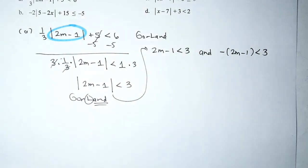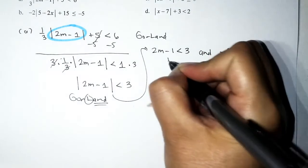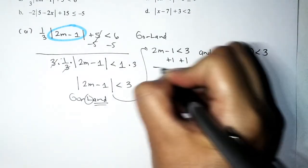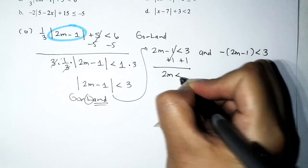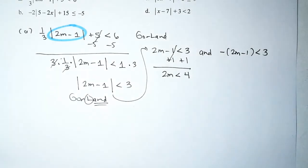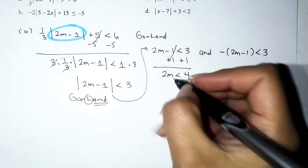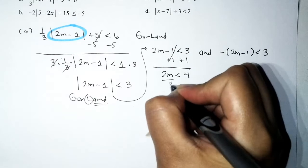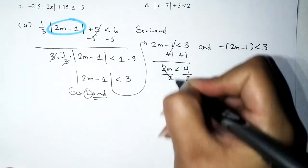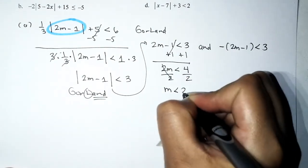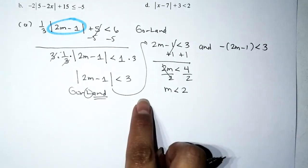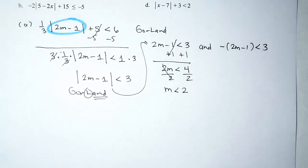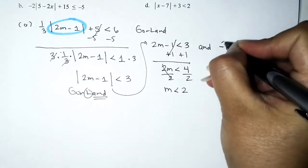First inequality: add 1 to both sides to get 2m < 4, then divide both sides by 2, giving m < 2. One inequality down, one more to go.